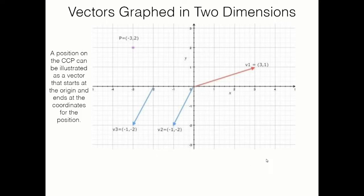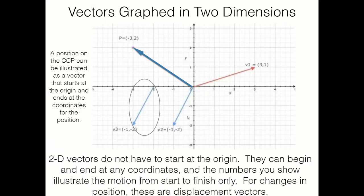Here's another example: point P at (3, 2). But what about a vector that doesn't start at the origin? Vectors do not have to start at the origin — position vectors do, but displacement vectors do not. They can begin and end at any coordinates. The numbers, such as (−1, −2), illustrate the motion from start to finish. So starting at (−2, 0) and moving to (−3, −2) is a change of −1 in x and −2 in y — these work as displacement vectors from one position to another.